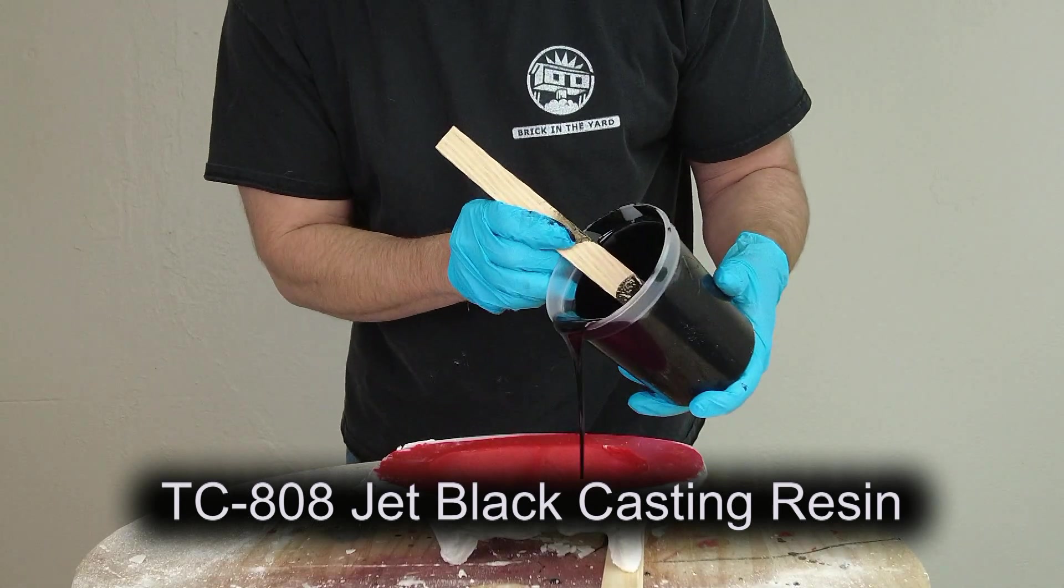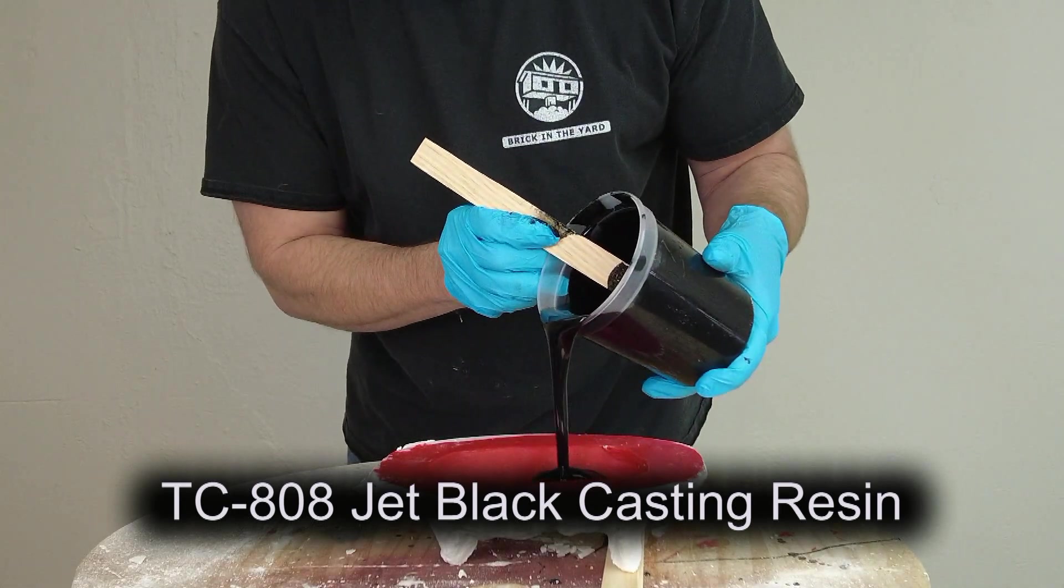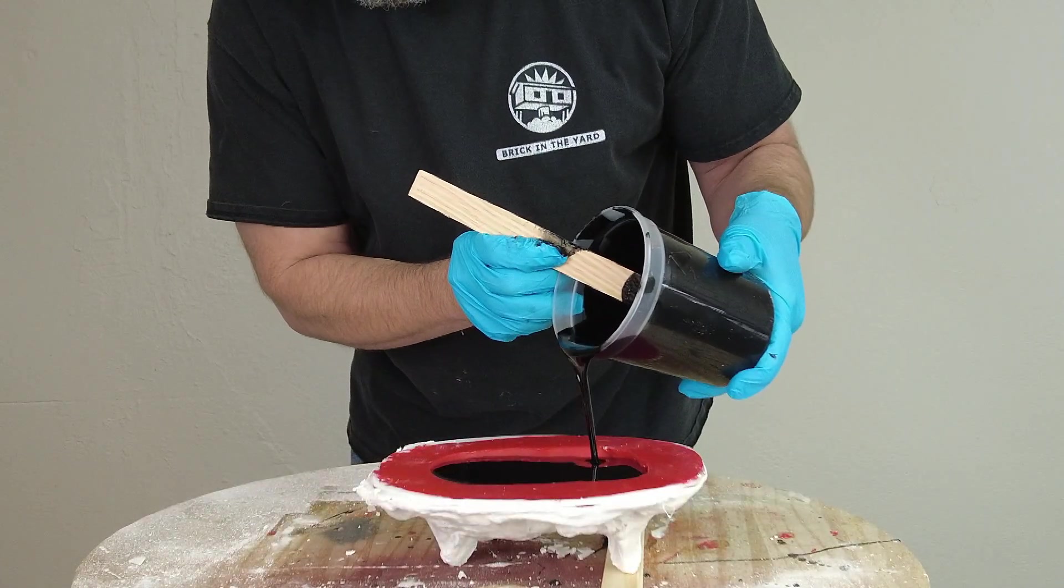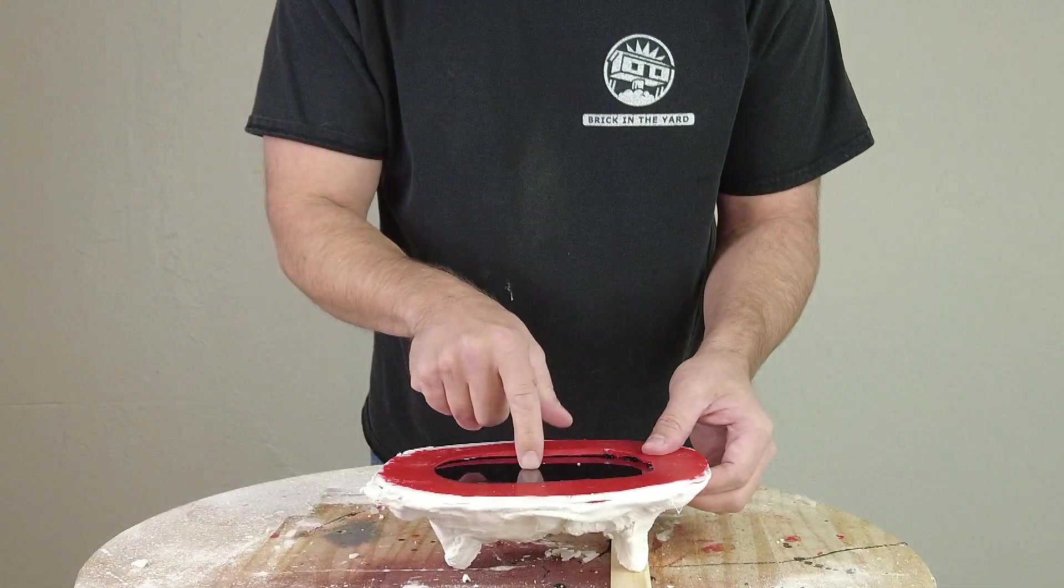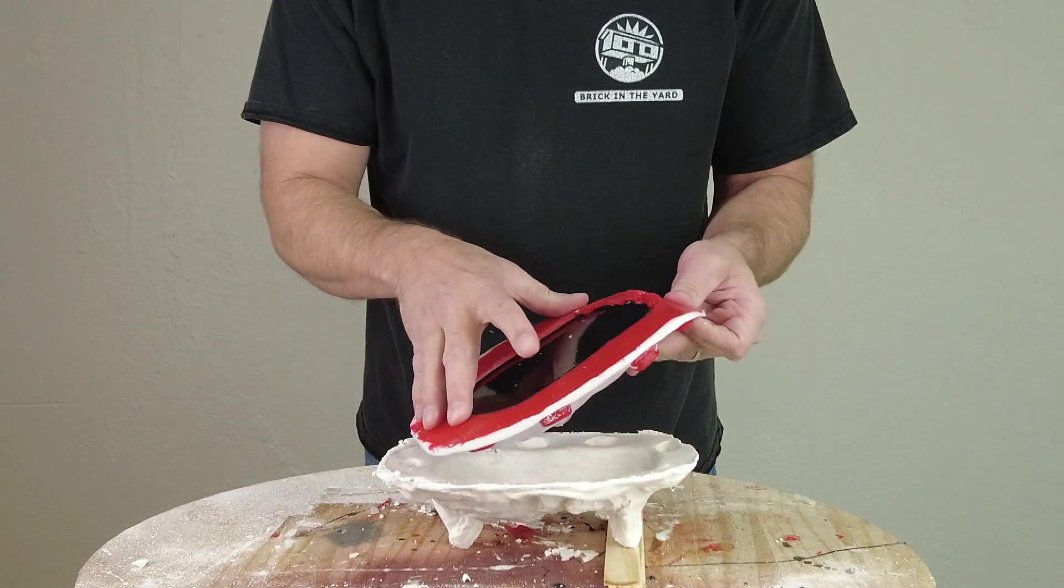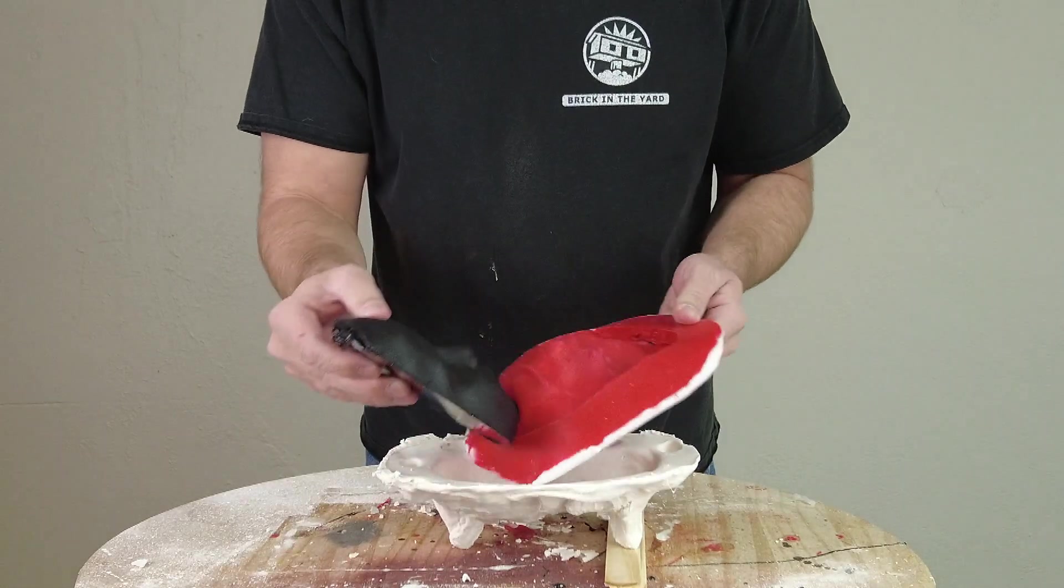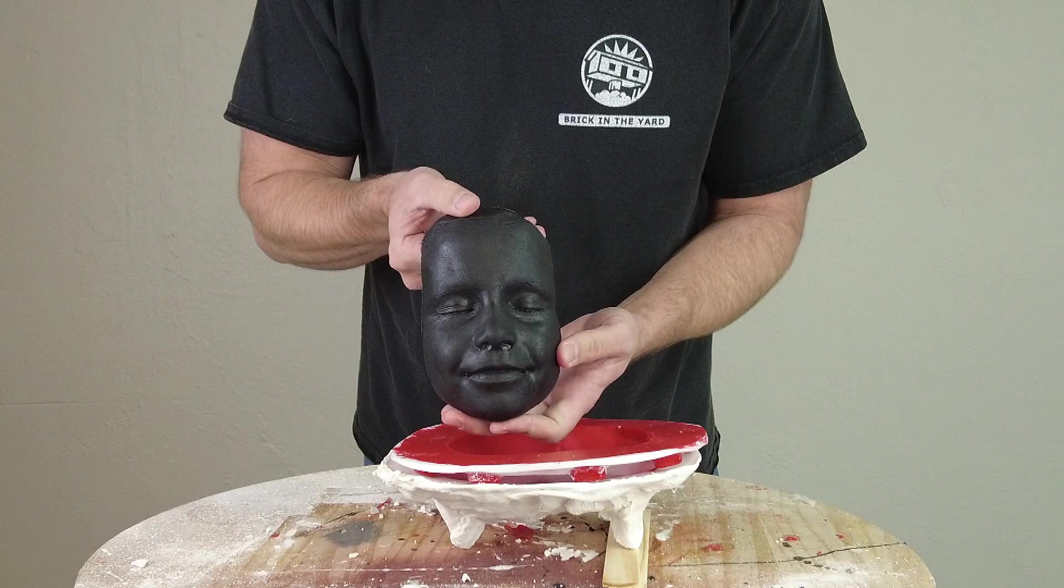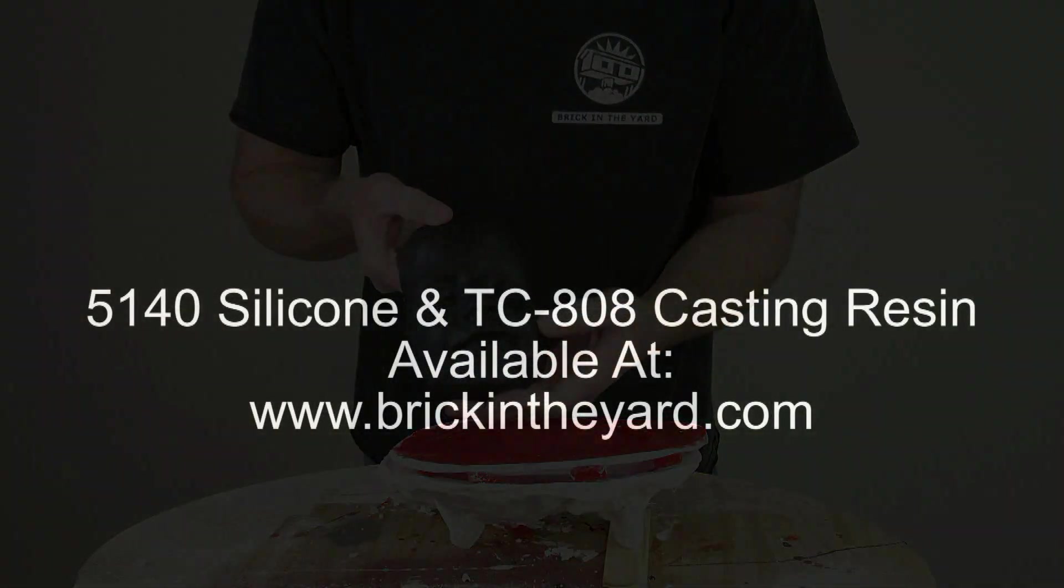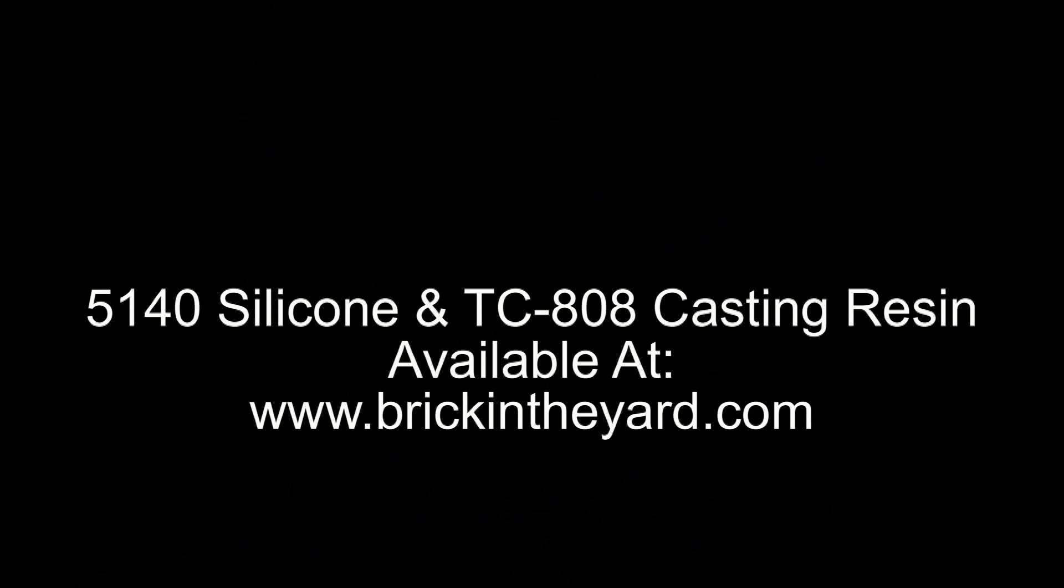Now we're just going to pour a quick cast using some TC-808 jet black casting resin. The reason I reached for this particular formula is this lends itself well to metallic effects. I could do a quick dry brush of copper or bronze or silver over the top of this with some Sculpt Nouveau paint and wind up with a really nice classic sculpture look. So there you have the process of making a simple brush-on mold using 5140 silicone and the TC-808 jet black casting resin.